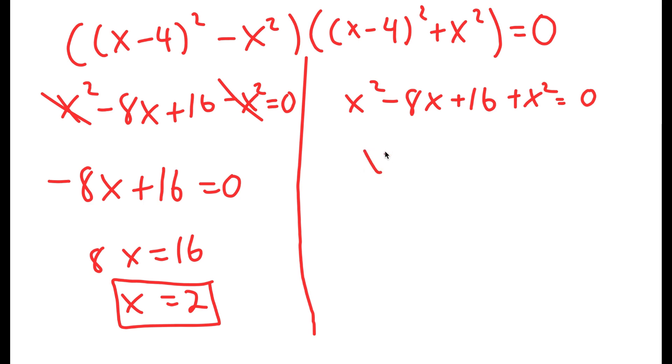And for this, I get 2x squared minus 8x plus 16 is equal to 0. And if I divide both sides by 2, I get x squared minus 4x plus 8 is equal to 0.